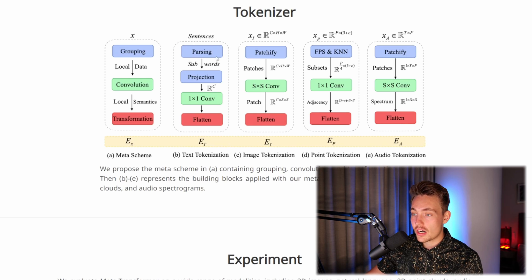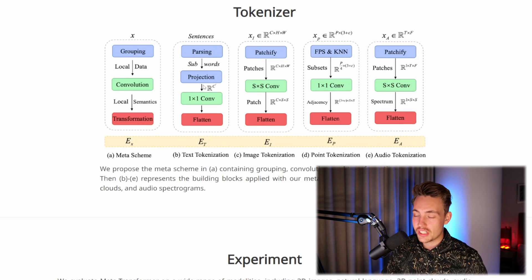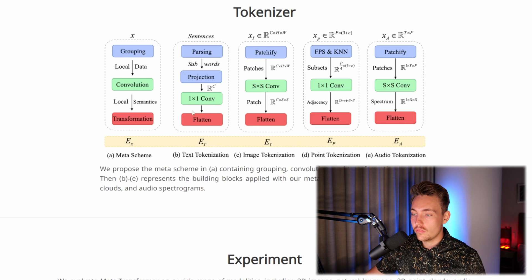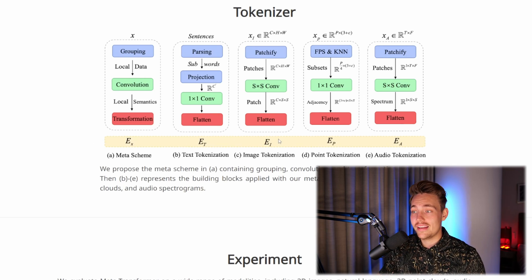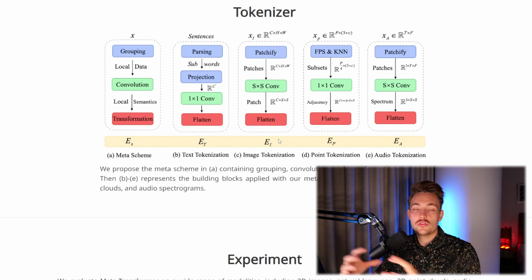For text, we take our sentences and parse them, dividing into subwords, then apply a projection. This is basically the standard transformer approach — a linear projection that we learn during training to get the data into an embedding space, then a one-by-one convolution, and flatten at the end. Once we've combined and tokenized our input into the exact same space, we just have numbers that we can throw into our transformer architecture, train the model, and apply it across various domains.